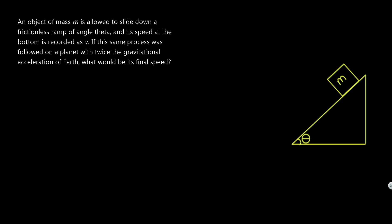An object of mass m is allowed to slide down a frictionless ramp of angle theta, and its speed at the bottom is recorded as v. If this same process was followed on a planet with twice the gravitational acceleration of Earth, what would be its final speed?